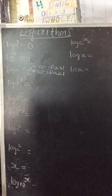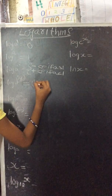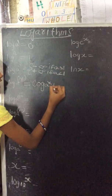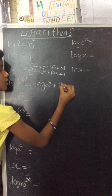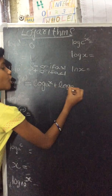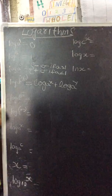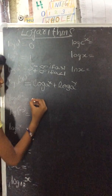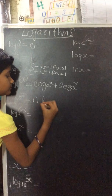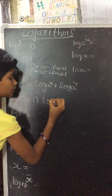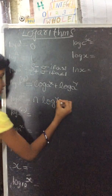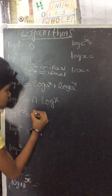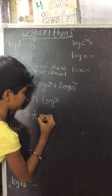log_a(x/y) = log_a(x) + log_a(y). log_a of the nth root of x equals (1/n) log_a(x).